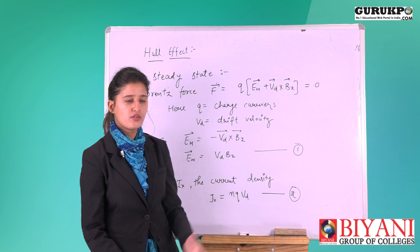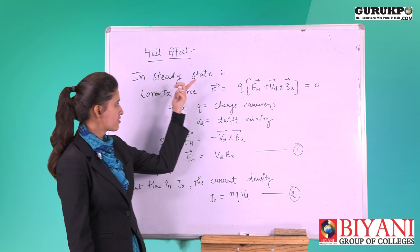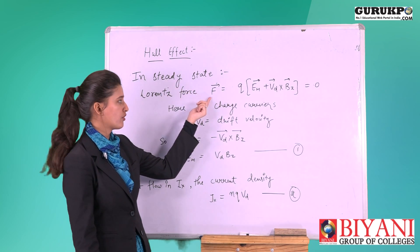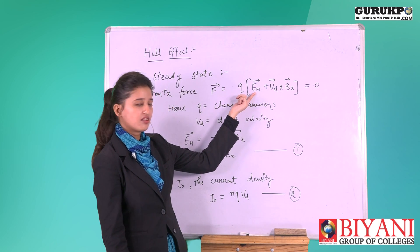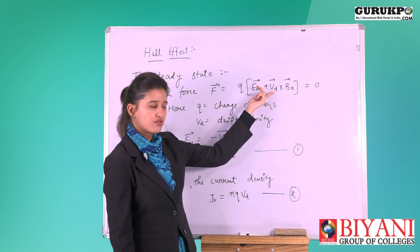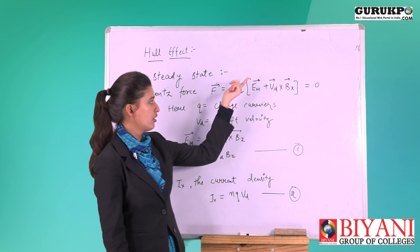After the definition, we will derive Hall Effect. In steady state, Lorentz force is F equal to Q E_h plus V_d cross B_z. Here E_h is electric field, V_d is drift velocity, B_z is magnetic field, and Q is charge.